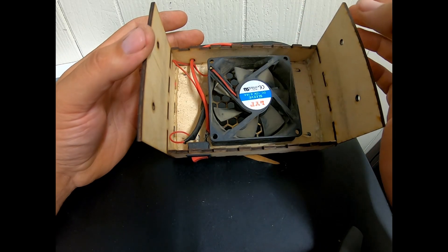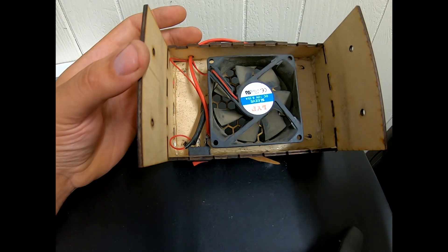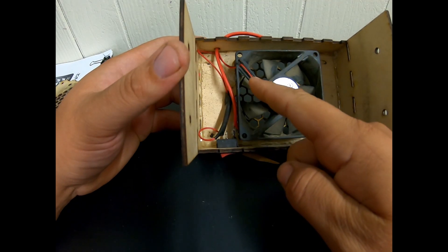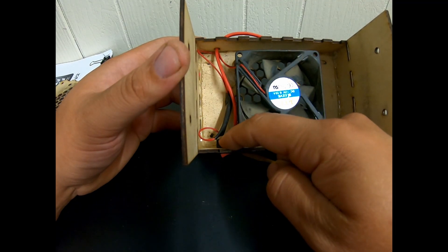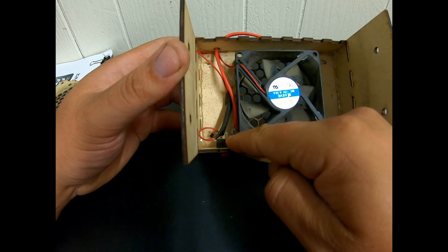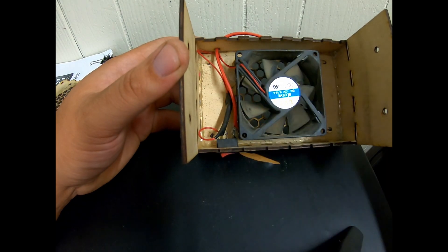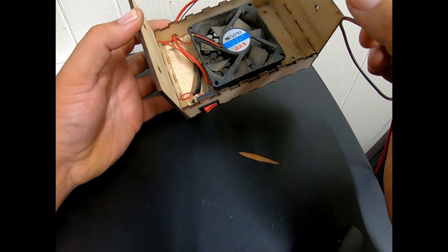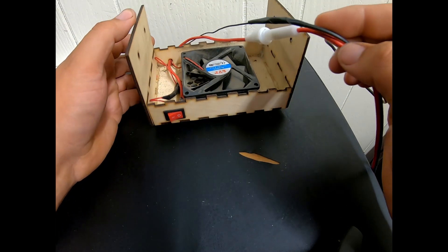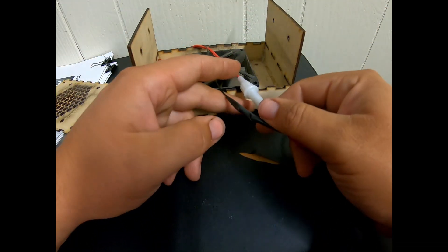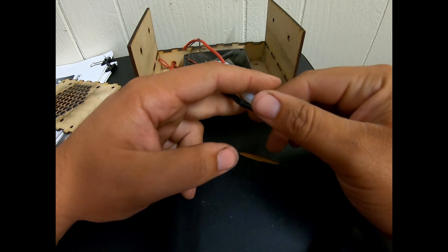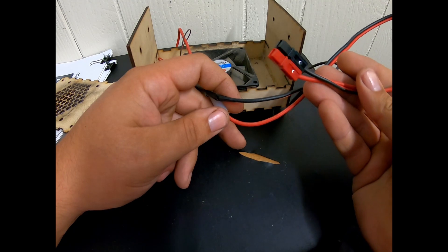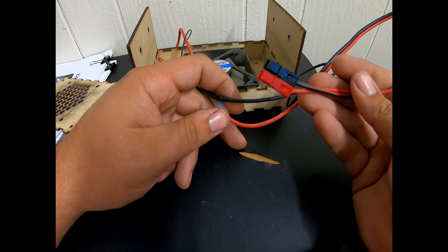Set your fan in, and then I soldered one end of the fan positive to the switch, and the other side of the switch has my 12 volt power cable. And then the negative side of the fan, I put a little fuse on it just for some protection and then ran it to an Anderson power pole.